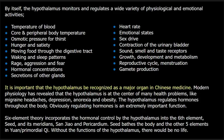Very important systems, from digestive to circulatory to sexual reproduction. It is important that the hypothalamus be recognized as a major organ in Chinese medicine — that's simply clear, and it's time. Modern physiology has revealed that the hypothalamus is at the center of many health problems, like migraine headaches, depression, anorexia and obesity. The hypothalamus regulates hormones throughout the body, and regulating hormones is an extremely important function that must be recognized by meridian theory and acupuncture philosophy. Six-element theory incorporates the hormonal control by the hypothalamus into the sixth element, seed, and its meridians, Sanjiao and pericardium. Seed bathes the body and the other five elements in yuan primordial qi.